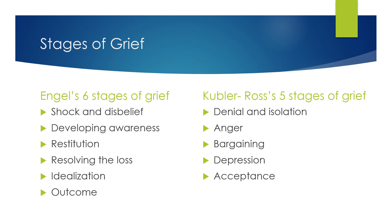There are two main theorists that discuss death and dying and the stages of grief, and that's Engel and Kubler-Ross. Both of these theorists define the stages of grief and the feelings that people go through. Both of them are fairly similar. They both start with the initial shock and denial of the loss. They both end the same when the person experiencing the loss ultimately accepts the outcome. What happens during those two phases is a little bit different depending on which theorist you're looking at. However, both of these theorists agree on one thing: grief is not a linear process. Grief does not go step by step. People can move in and out of these stages of grief over and over again before they actually accept the outcome. And sometimes people never accept the loss — they can never get over that death.